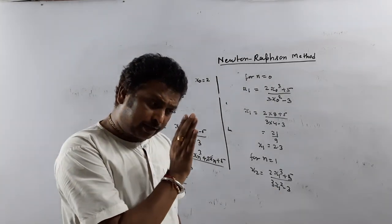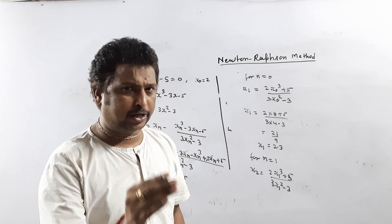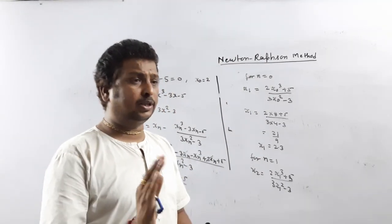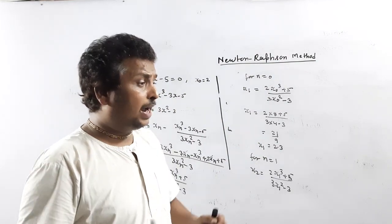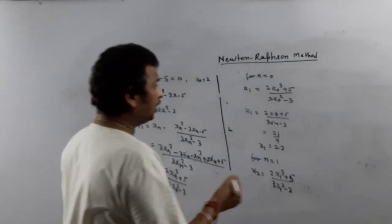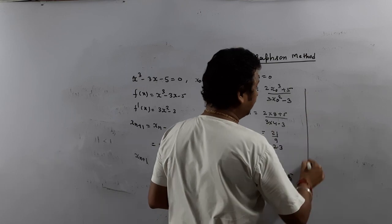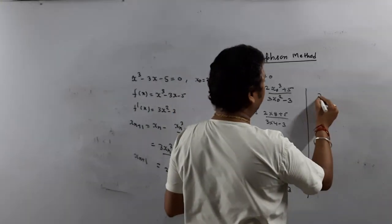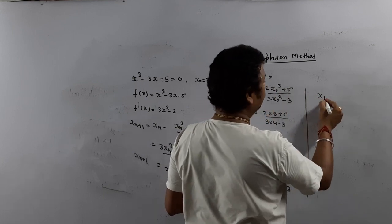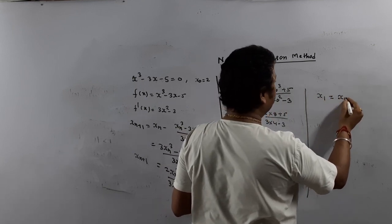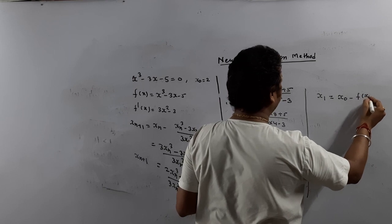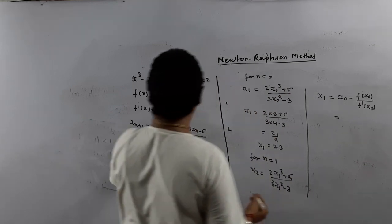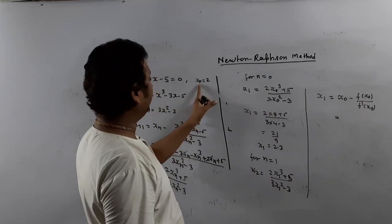But during the competitive exam, they will ask you to calculate the value after one iteration or after two iterations and we have to save time. So what we do is, if they ask to calculate the value after one iteration, what is x_1? x_1 is x_0 minus f(x_0) upon f'(x_0). So directly you can calculate. f(x) is given and x_0 is given as 2.